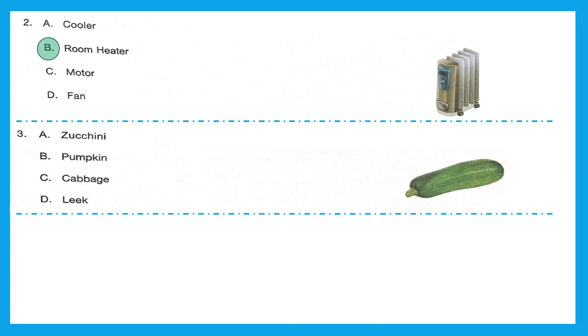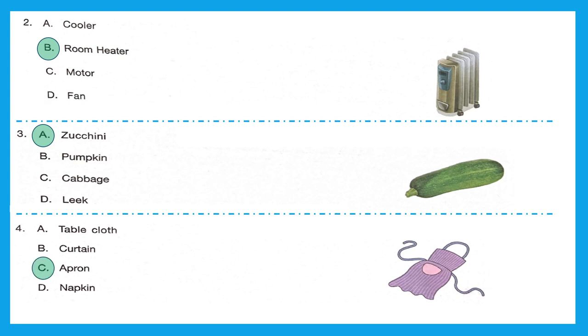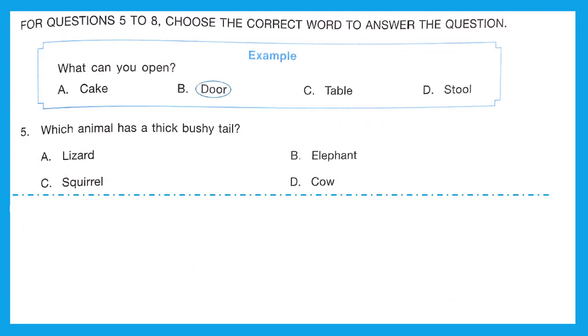Question 3, which vegetable is this? It is zucchini. Option A is the right answer. Question 4, can you guess what it is? It's an apron. Option C is the right answer. For questions 5 to 8, choose the correct word to answer the question.